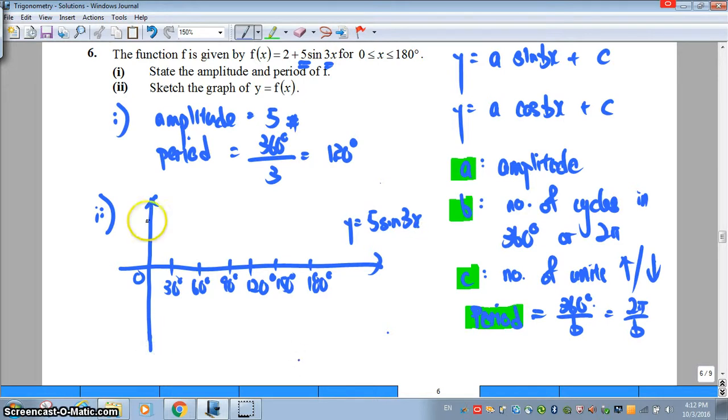Since the magnitude is 5, my maximum will be 5, my minimum will be negative 5. This is a sine curve, so I'm going to start from 0, go to the maximum, go back to 0, minimum, go back to 0, maximum, before you go back to 0 again.